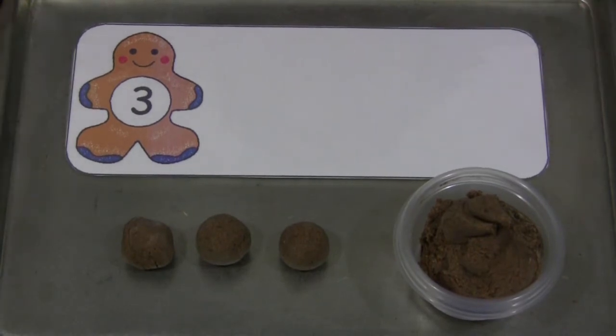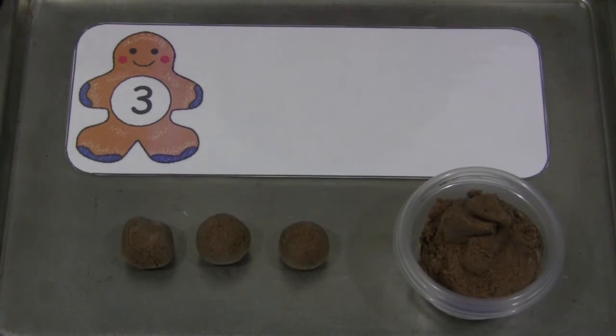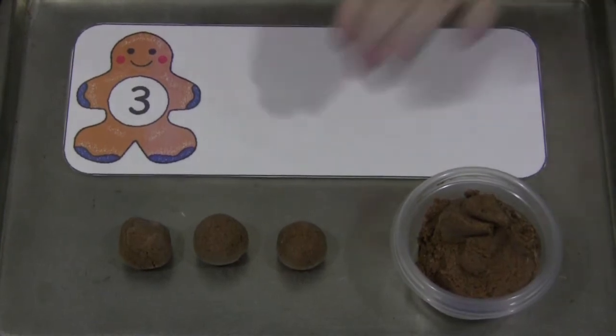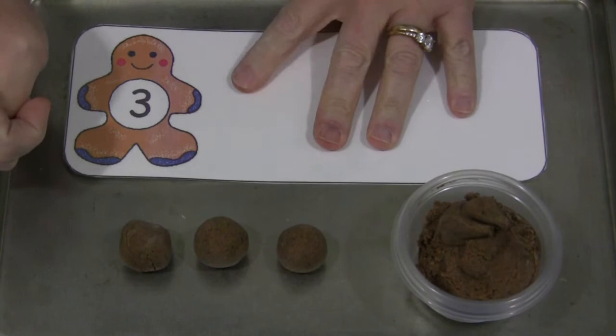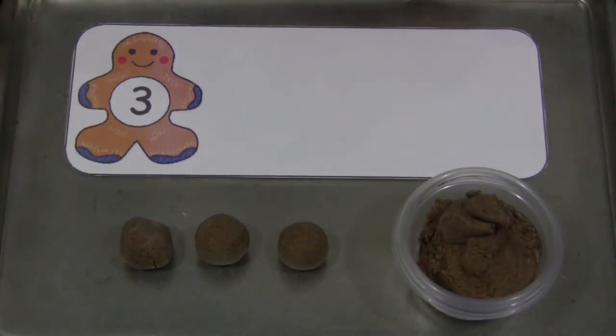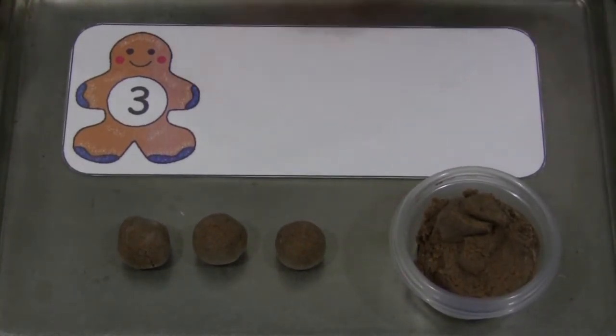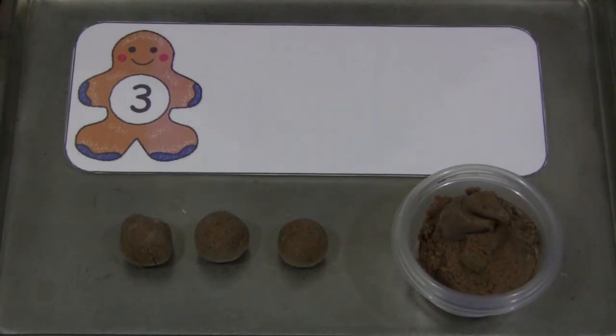You can also use pom-poms. If you attach a self-adhesive magnet to the back of that, they stick really great onto the surface or you don't have to use magnets at all. The children can just place them on there and use them for counting on here for the gingerbread men.